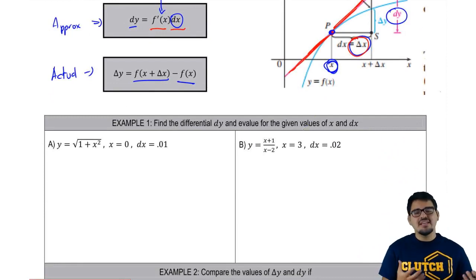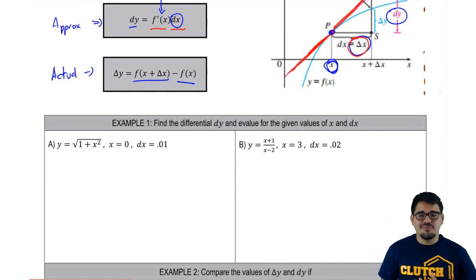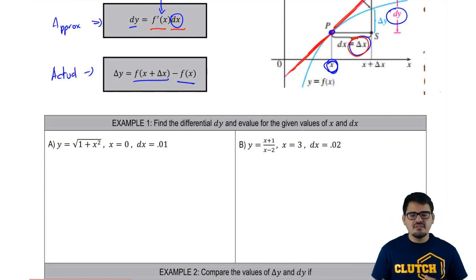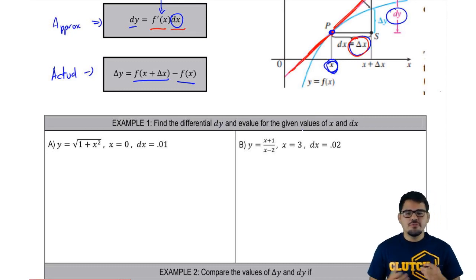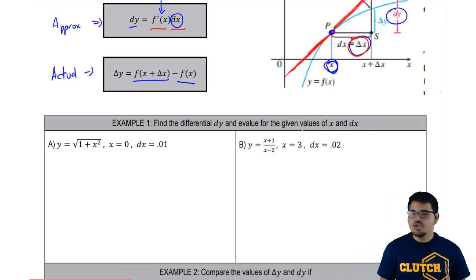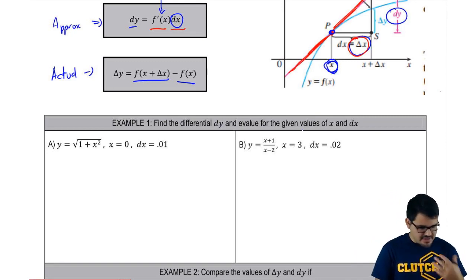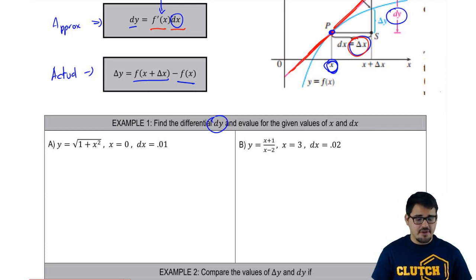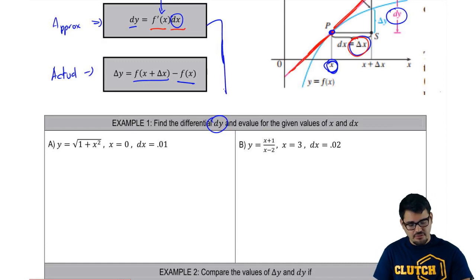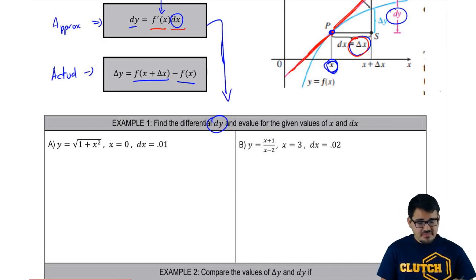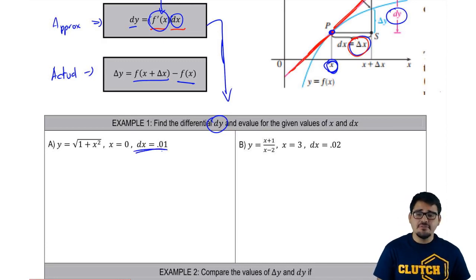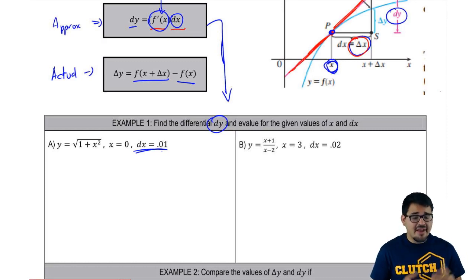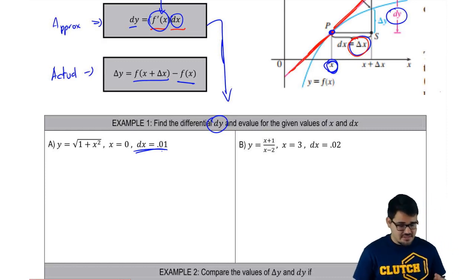This differential stuff would be really easy with simple functions, so instead of wasting time on easy examples, I decided to throw in some more difficult derivatives to make this video worth watching. So let's start with the first one: we've got to find the differential dy and evaluate it for the given values of x and dx. That means we need to find f prime of x and then multiply by our dx. Since dx is already given, I just need to find my f prime of x.